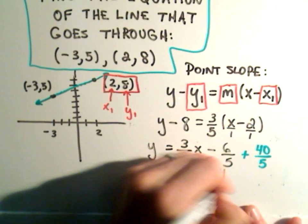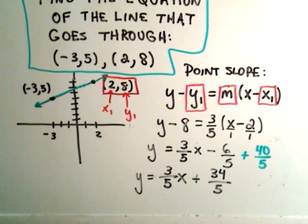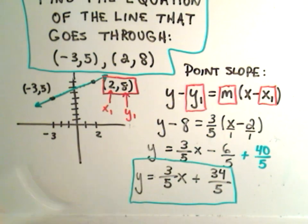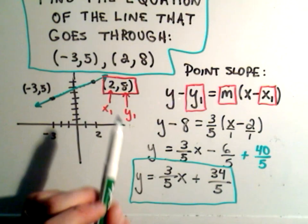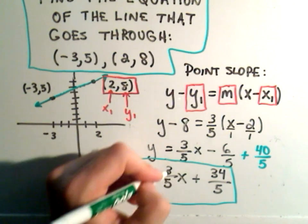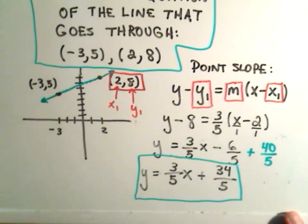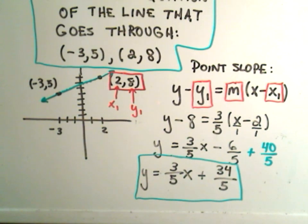And that is now the equation of the line, again, that goes through my two points, negative 3, 5 and 2, 8. And again, we've just put it in slope intercept form, y equals mx plus b.